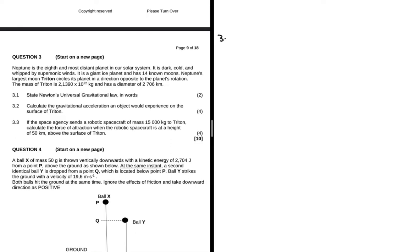Question 3.1 states Newton's universal gravitational law in words. We know that by formula F equals G m1 multiplied by m2 divided by r squared. We can see from the formula that every body in the universe will attract every other body with a force that is directly proportional to the product of their masses and inversely proportional to the square distance between them.